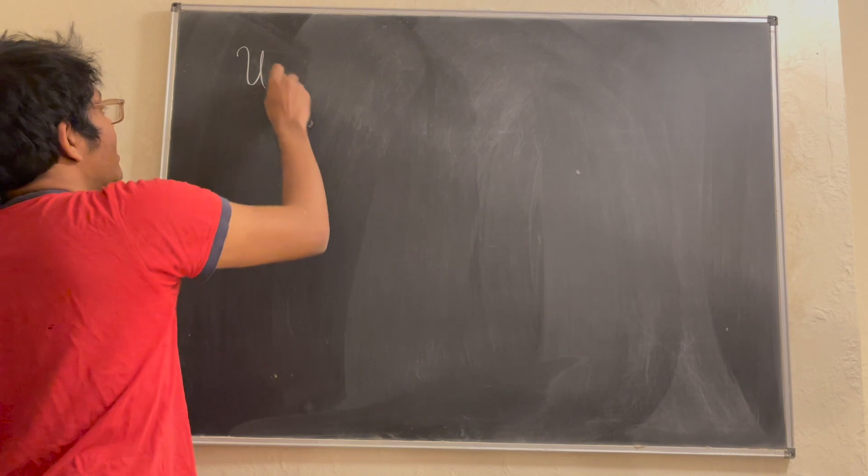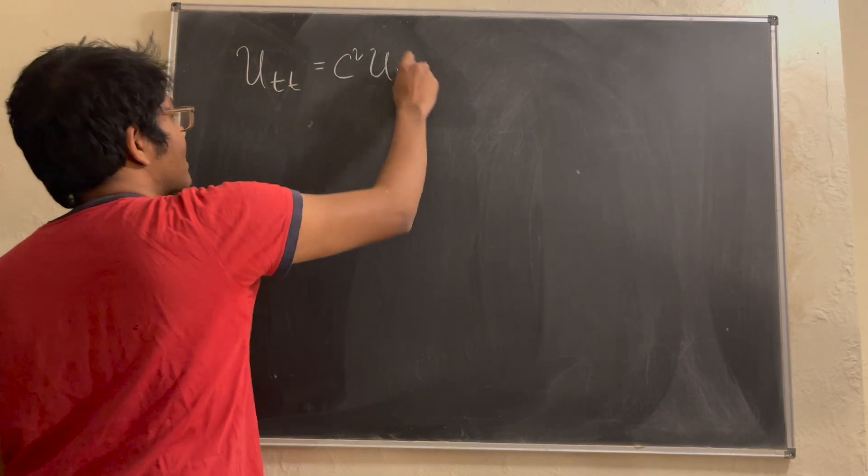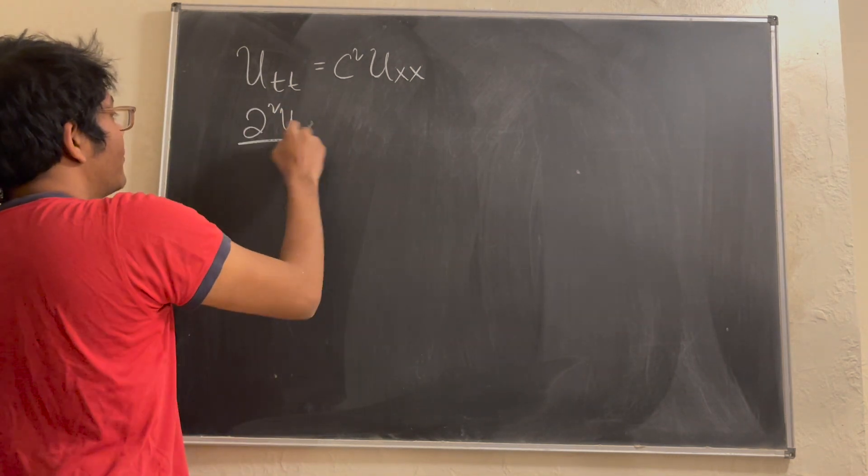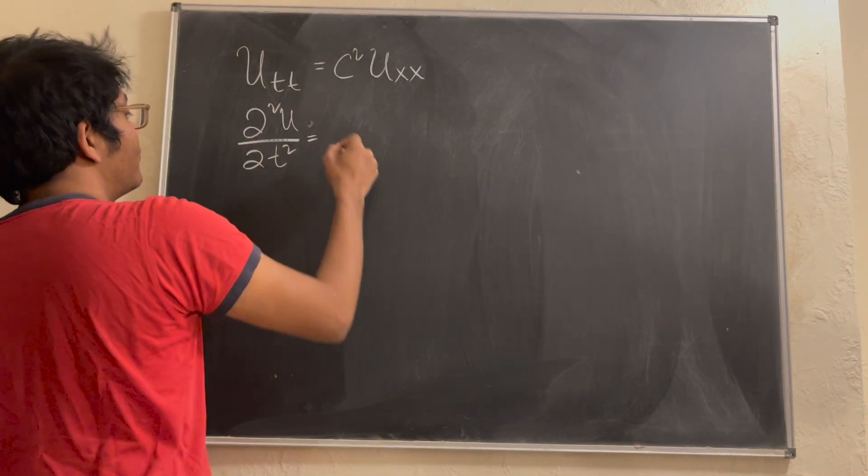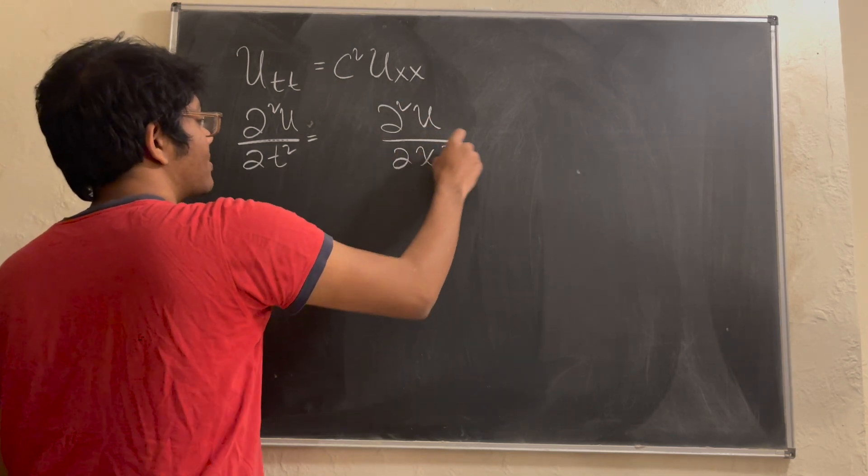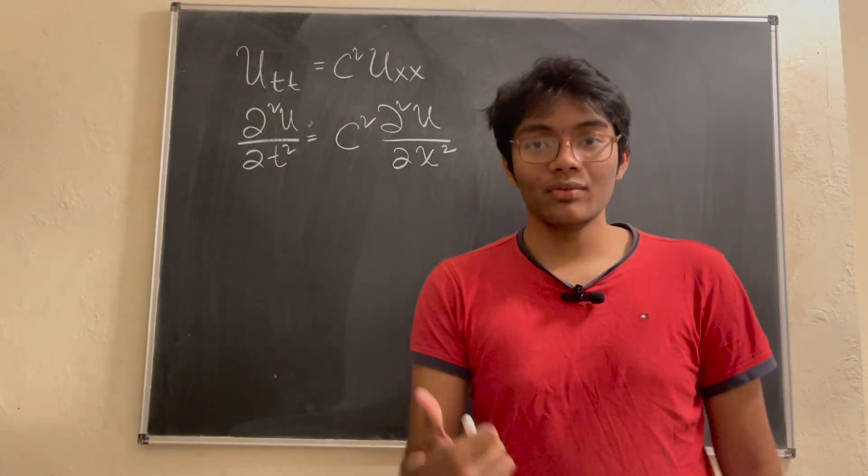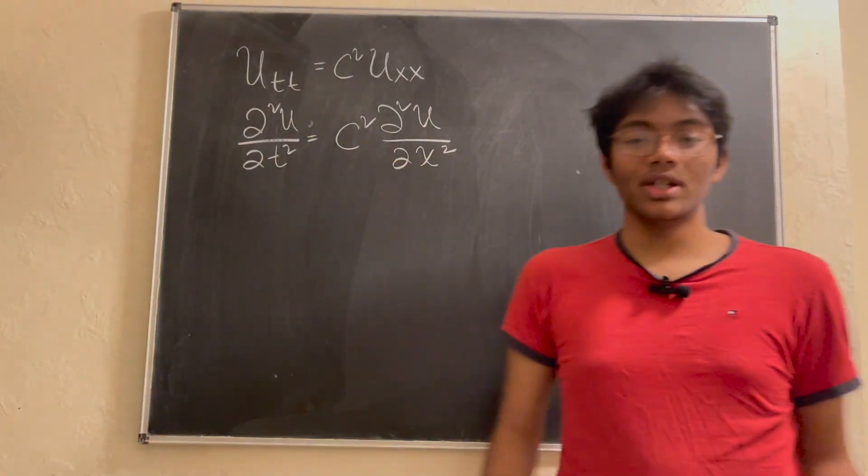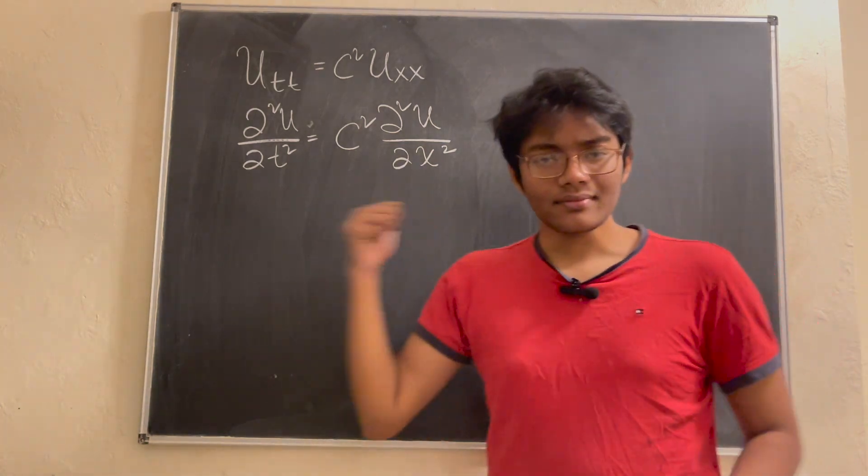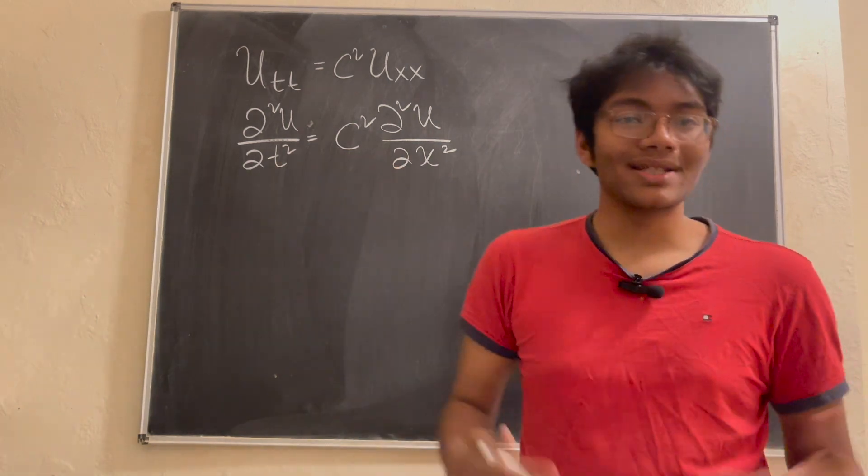You may have seen it written as u sub tt is equal to c squared u sub xx. In other words, the second partial derivative of the wave with respect to time is equal to the second partial derivative of the wave with respect to space times c squared. c is the speed of the wave. That c is very suggestive because it can be the speed of light, for example. But this is the equation for, you can use it to represent a planar wave.